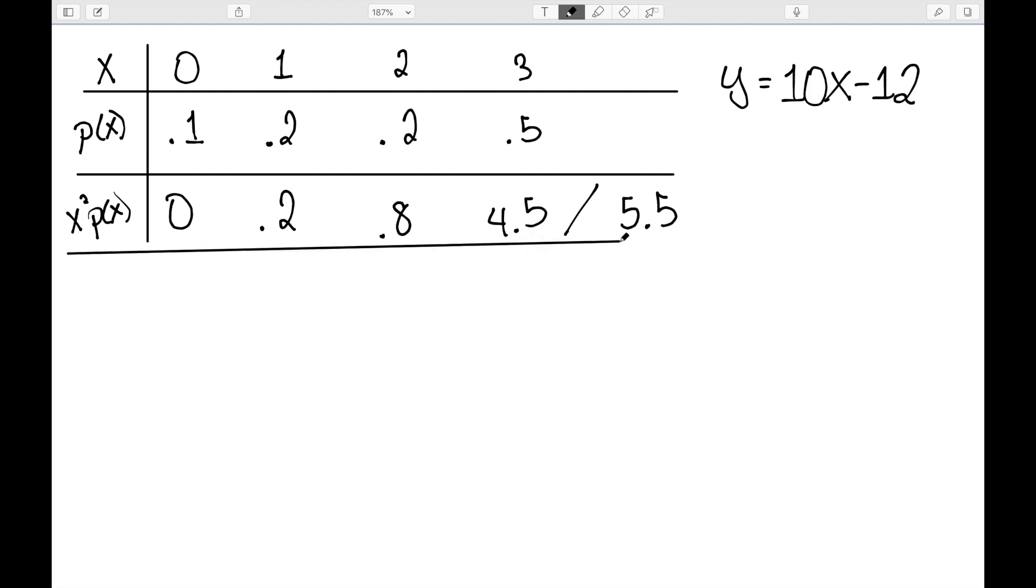From there, we need to subtract the mean. So let's find that. This time, just x p of x. 0 times 0.1 is 0, 1 times 0.2 is 0.2, 2 times 0.2 is 0.4, and 3 times 0.5 is 1.5. This time, when we add them up, we get 2.1.